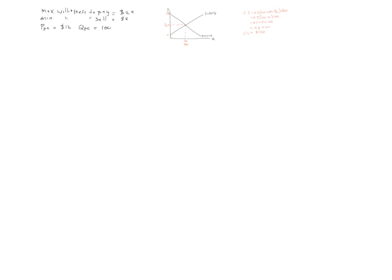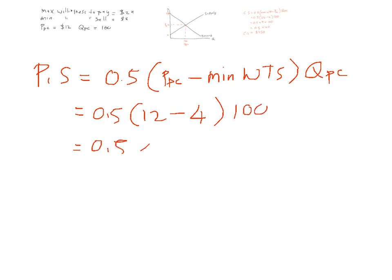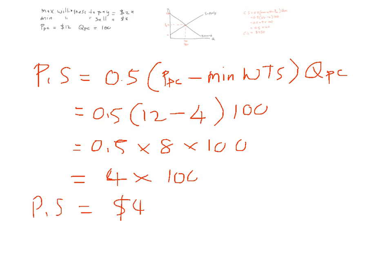Now let's calculate producer surplus. Again it's a triangle, so 0.5 multiplied by (selling price PPC minus minimum willingness to sell), multiplied by the equilibrium quantity. The selling price is $12 and producers are not willing to sell for anything less than $4. So 0.5 × (12 − 4) × 100, and producer surplus equals $400.